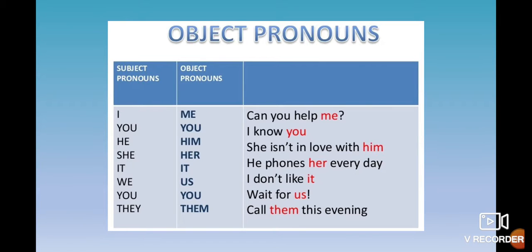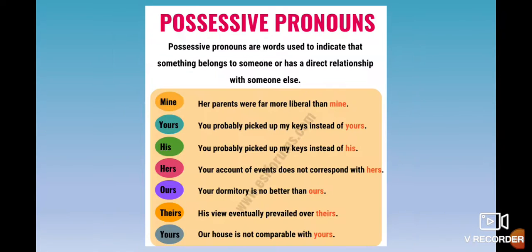Let's review. A subjective pronoun is used as the subject in a sentence and is at the beginning of the sentence. Object pronouns are used after a verb or after a preposition in a sentence. Now, possessive pronouns.